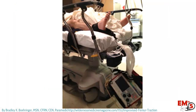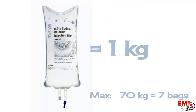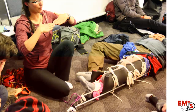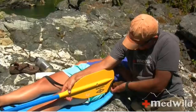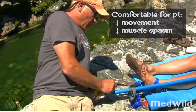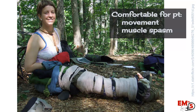Sometimes you might not have a traction splint, so people have gotten creative — that's how important this is. Here this team used a monitor; you can also use normal saline bags. They're one kilogram each, so for a 50 kilo patient, you hang five bags, up to a max of seven bags. This is also a common topic in wilderness medicine. Here they're using a ski pole — you can even use a canoe paddle. Not only does this stabilize the fracture, it's actually comfortable for the patient, decreases movement during transport, and helps decrease muscle spasm, which can be quite painful.